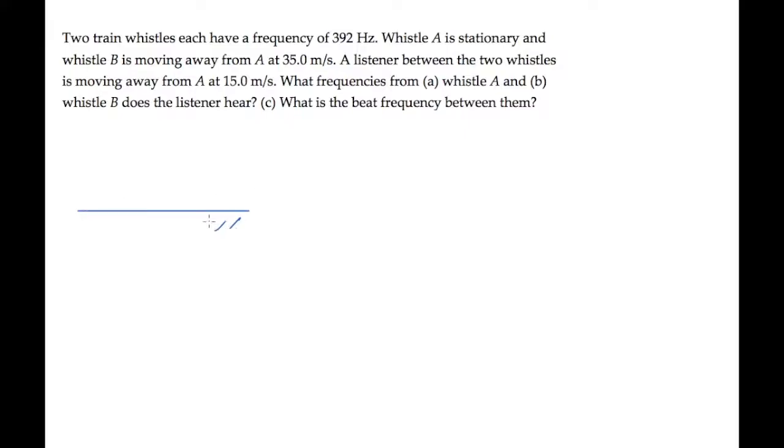In this problem, there are two trains and a listener. Train A, drawn in red, is stationary. Train B, drawn in green, is moving to the right at a speed of 35 meters per second. The listener is between the two trains, also moving to the right at a speed of 15 meters per second.